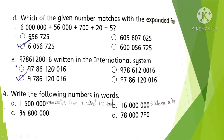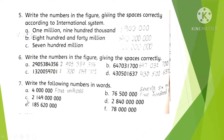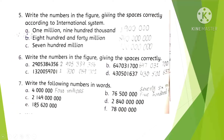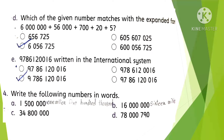This number written in the international system — the third option is also correct here. Question 4: Write the following numbers in words. Part A: one million, five hundred thousand. Part B: 16 million. Part C: 34 million, eight hundred thousand. You will write these in your notebook yourself. Part D: 78 million, seven hundred ninety.